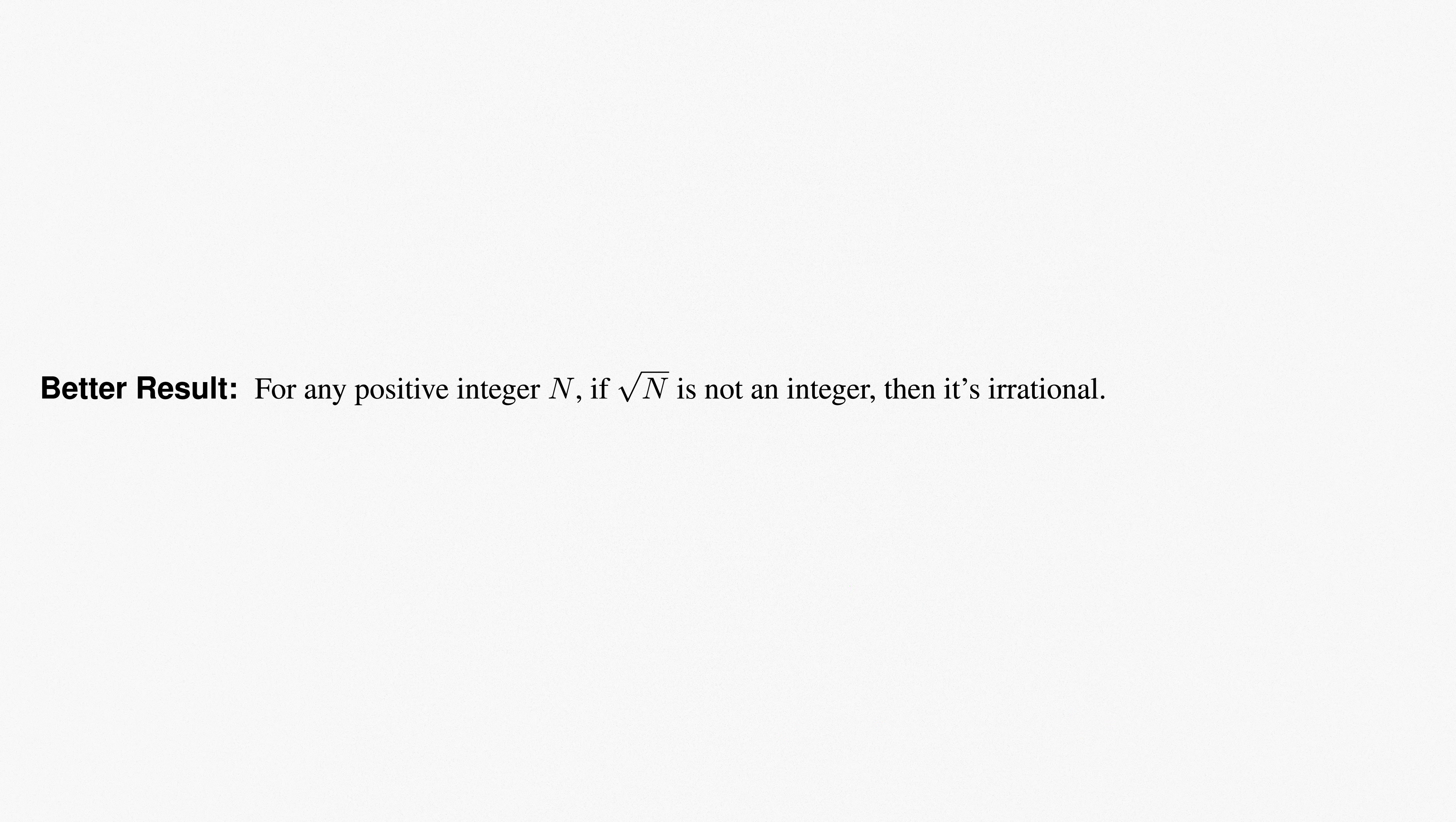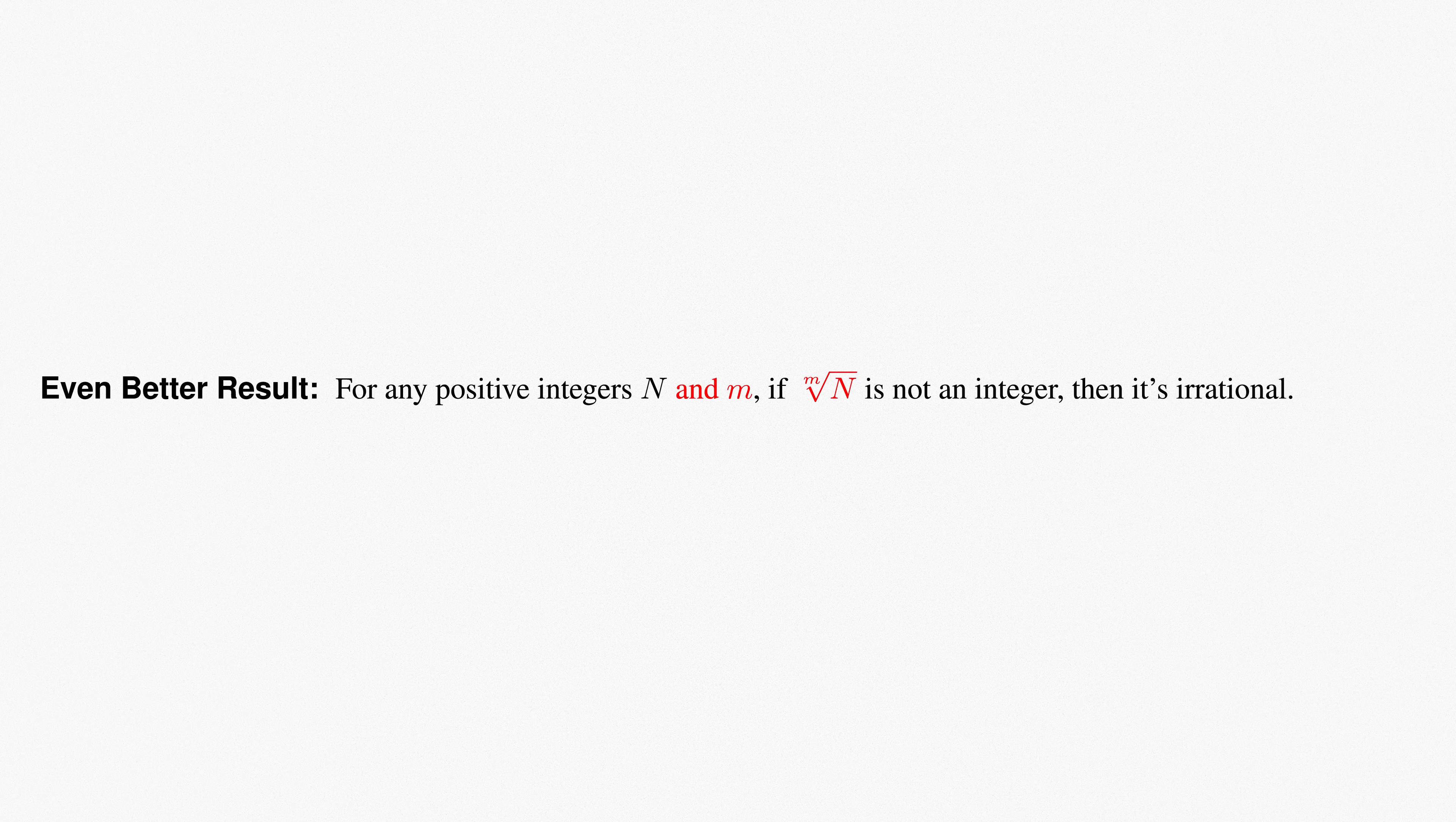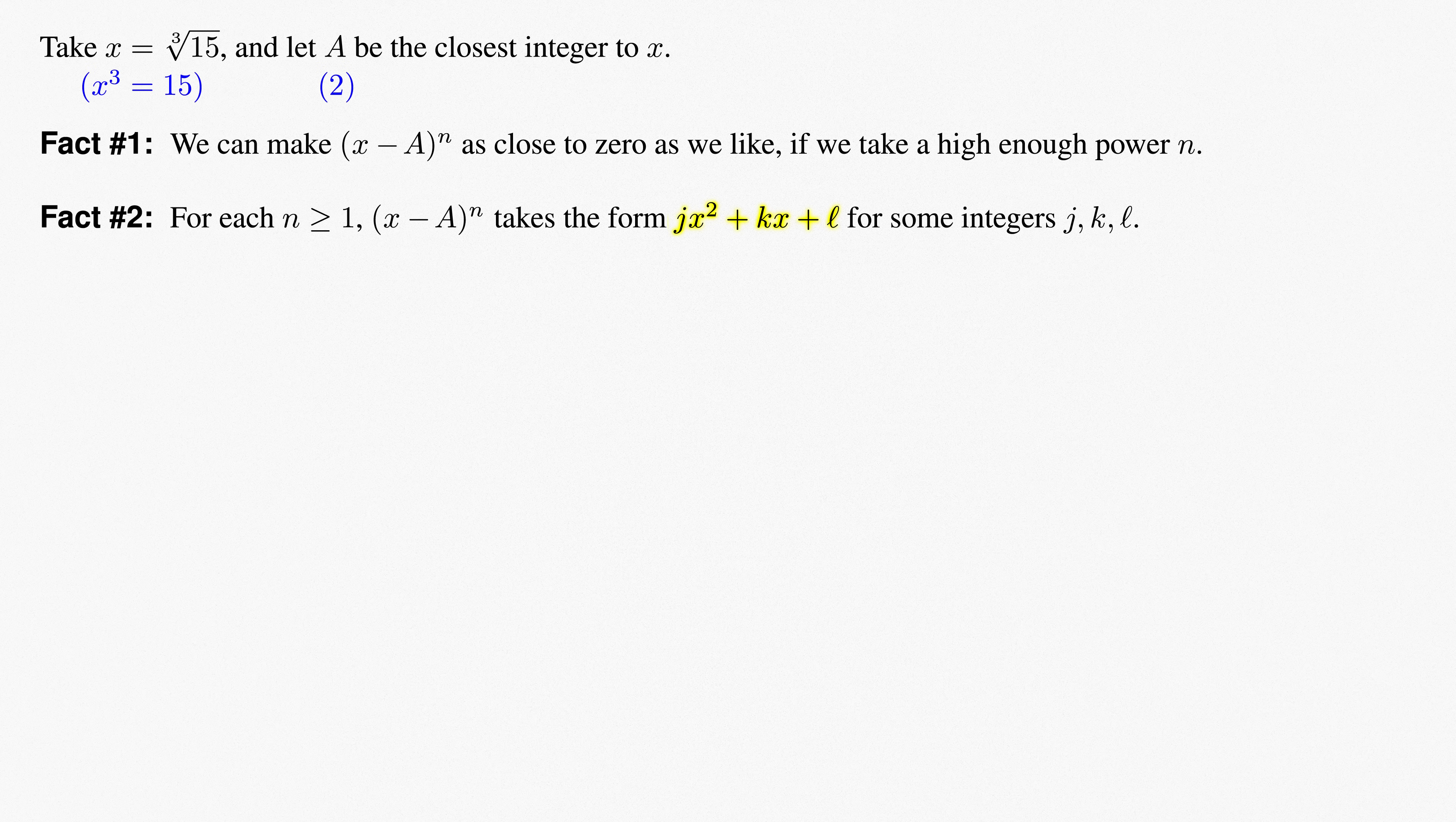As mathematicians, we want to generalize results as much as we can. The same techniques allow this result to be generalized further to show that any mth root of a whole number that's not an integer must be irrational. And it's not difficult, it just uses a bit more algebra and a fixed power of q in the denominator. For example, take x equals the cube root of 15, and note that by definition, x cubed equals 15. If a is the closest integer to x, which happens to be 2, fact number 1 would still hold. For fact number 2, we can show that each power, x minus a to the n, equals jx squared plus kx plus l for some integers j, k, and l.